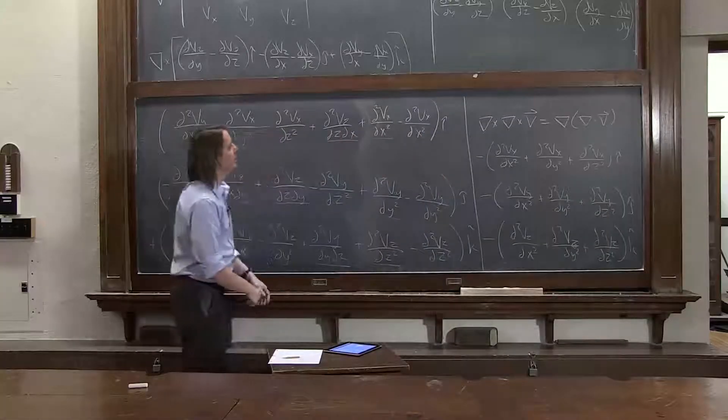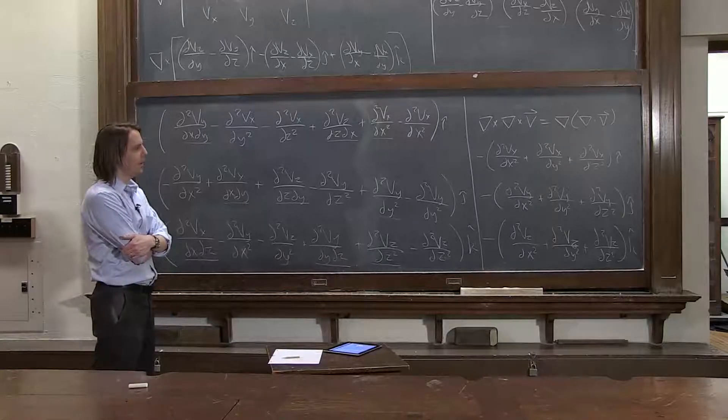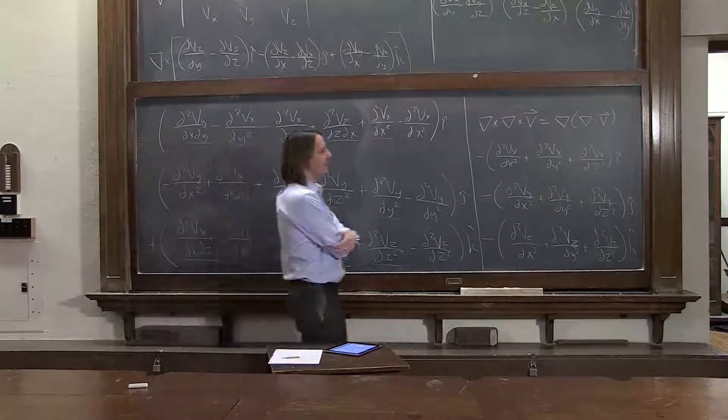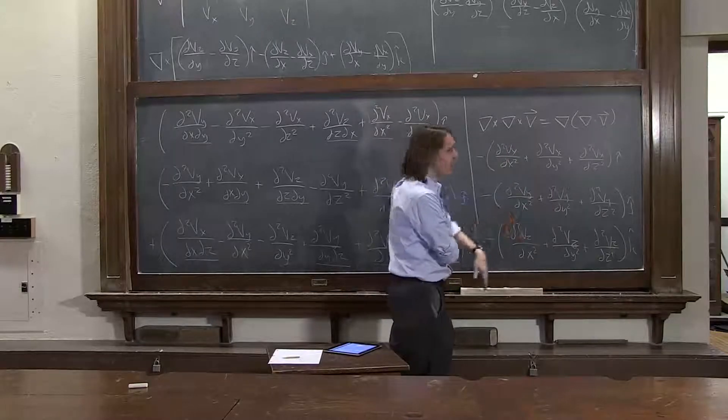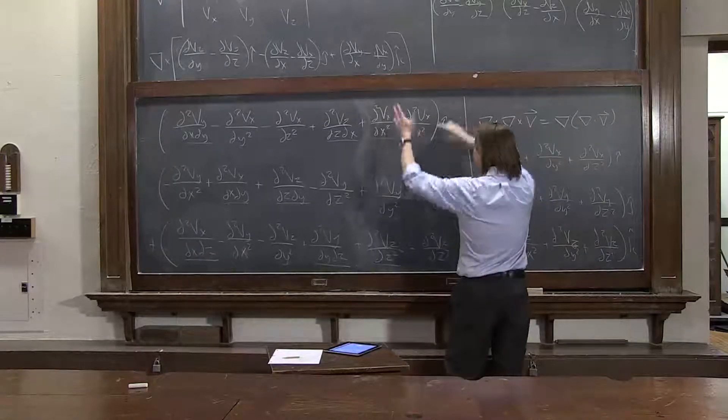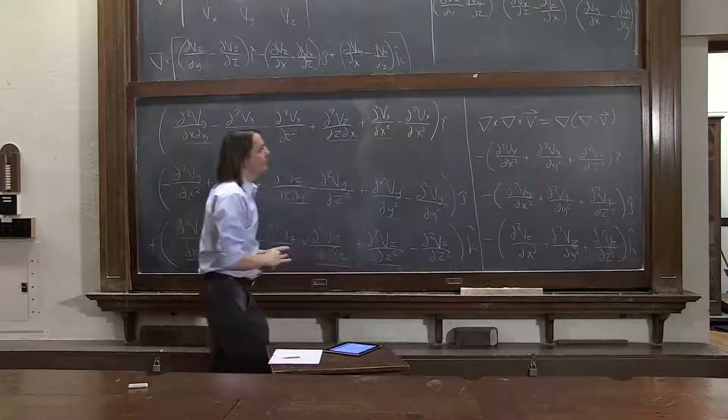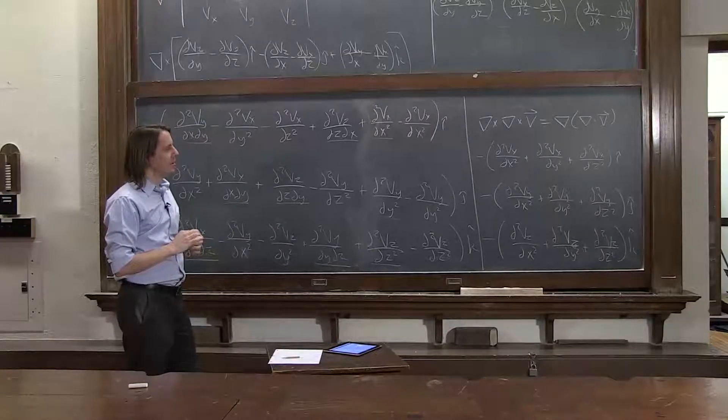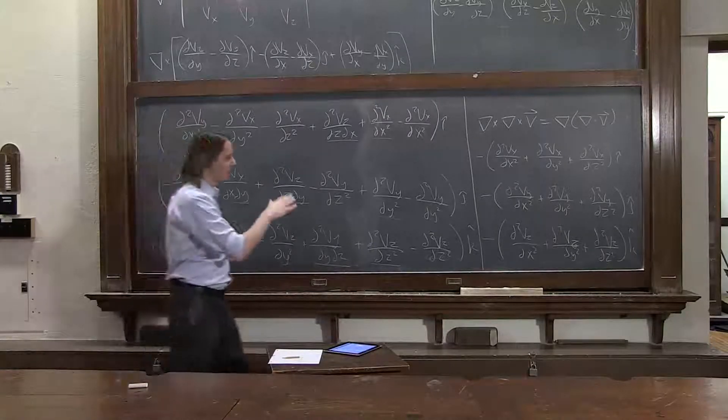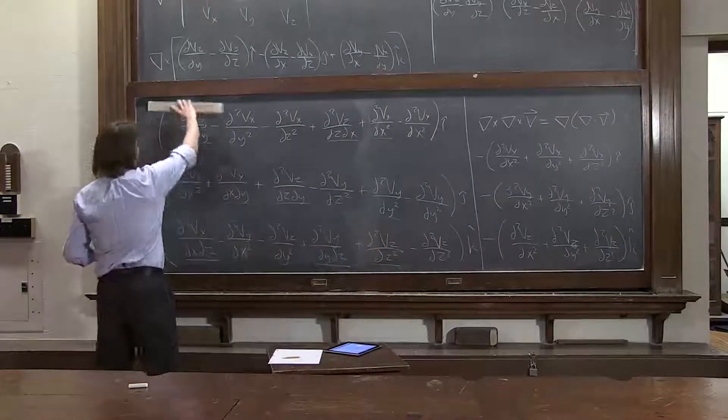All that stuff was left over. This is just a mess of just garbage. To even get it, you have to add terms and subtract them. You want to be able to say del cross del cross v is equal to del of del dot v minus something. And this is the something. And it's garbage. But we give it a fancy name to make ourselves feel better. So I'm going to erase this so that I have room.